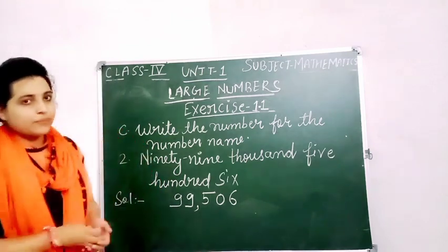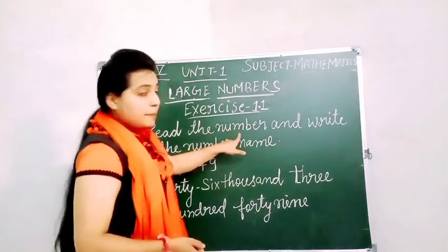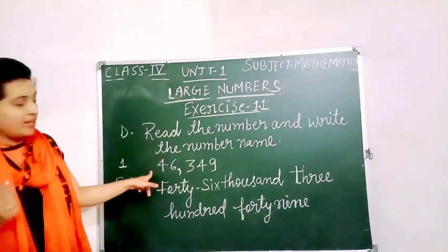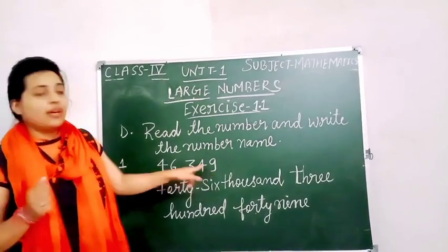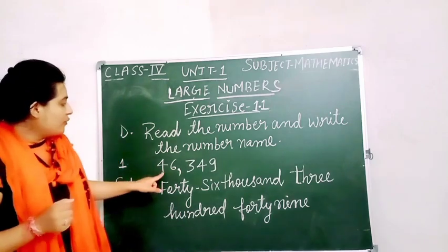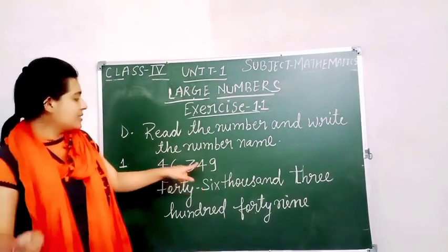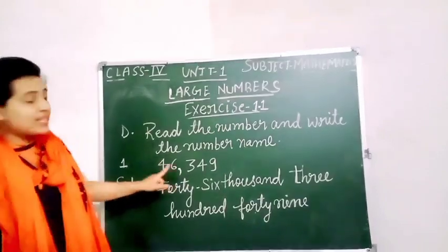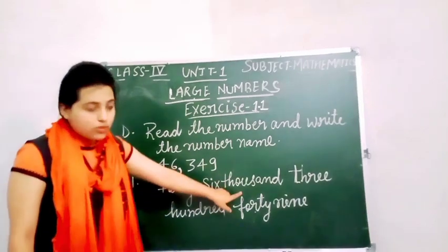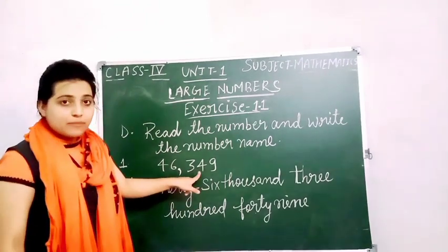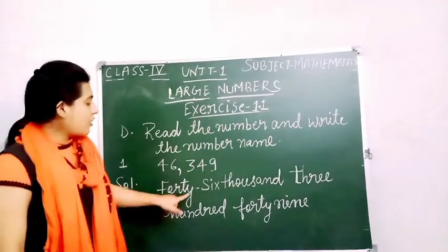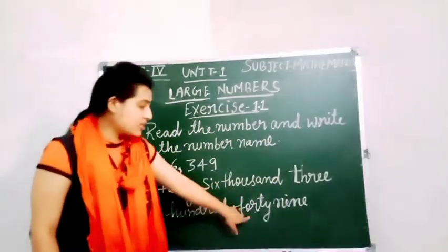Question D is: read the number and write the number name. The first question is 46,349. Here a number is given and we need to write its number name. 9 is in the 1's place, 4 is in the 10's place, 3 is in the 100's place, 6 is in the 1000's place, and 4 is in the 10,000's place. So the number name is forty-six thousand three hundred and forty-nine.